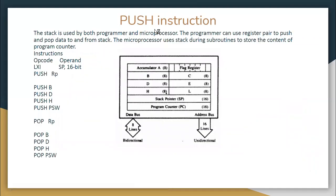The stack is used by both the programmer and the microprocessor. The programmer can use register pairs to push and pop data to and from the stack. The microprocessor uses the stack during subroutines to store the contents of the program counter. The program counter is a 16-bit register and the stack pointer is another 16-bit register — this is where we initialize the stack address. Register pairs available are HL, DE, BC, and also the accumulator and flag register.